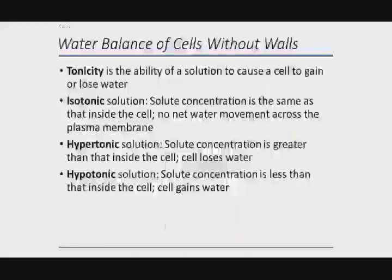Osmosis introduces a whole new set of terminology called tonicity — the ability of a solution to cause a cell to gain or lose water. It's a relative term. An isotonic solution means the solution outside the cell has the same concentration of solutes as inside the cell. Your body's internal environment is isotonic, so all your fluids have to have the same solute concentration as the inside of your cells.